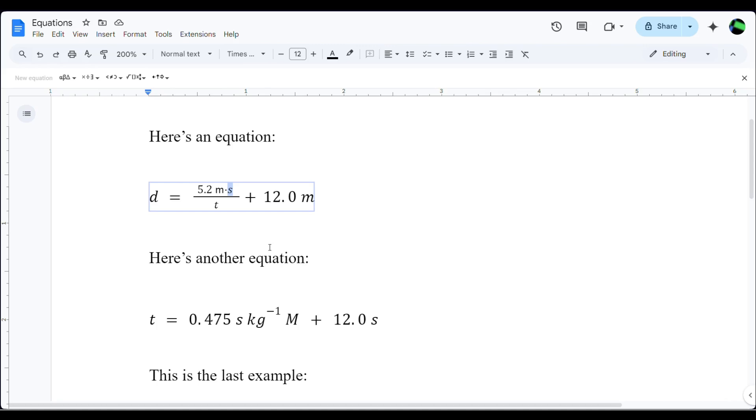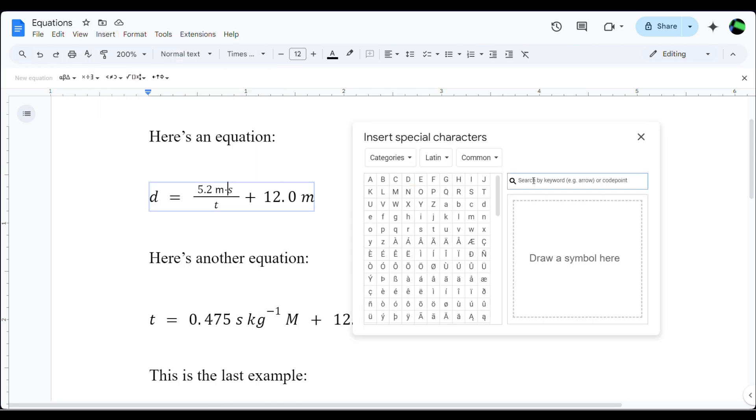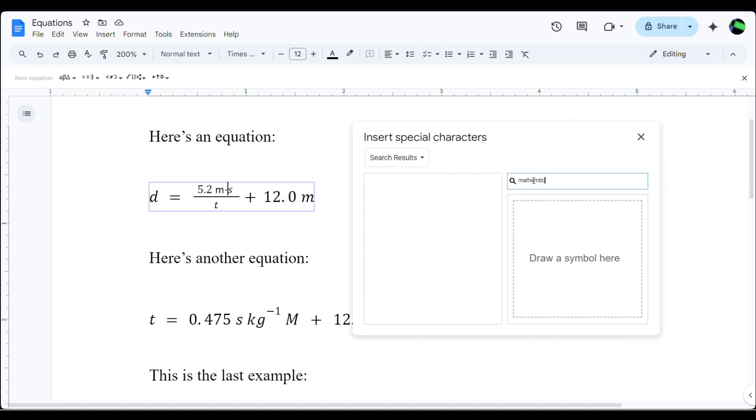Now the S right next to it represents seconds, so I want to replace it with a non-italicized S. Here's the process again. I go to Insert, Special Characters, and search for mathematical sans S.